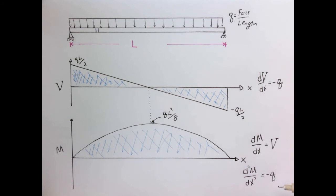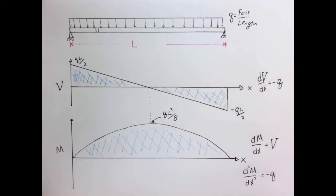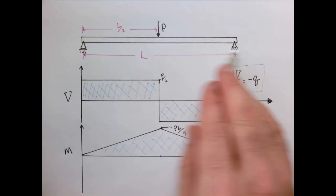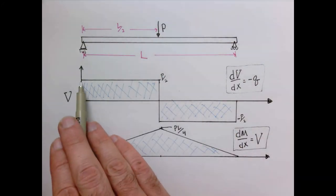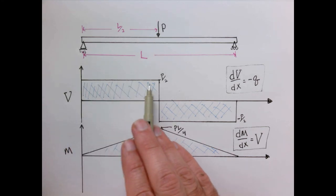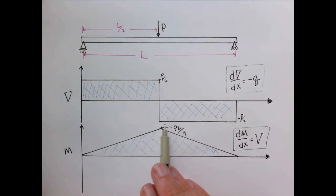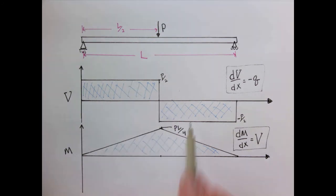These general relations derived for a small differential element are consistent with the results we found before. Let's check them against our other example: a beam of length L with a point load P applied at the center. We found that the shear diagram has a constant value of P/2, then switches to -P/2 at the load. Two regions of constant shear, one positive and one negative.